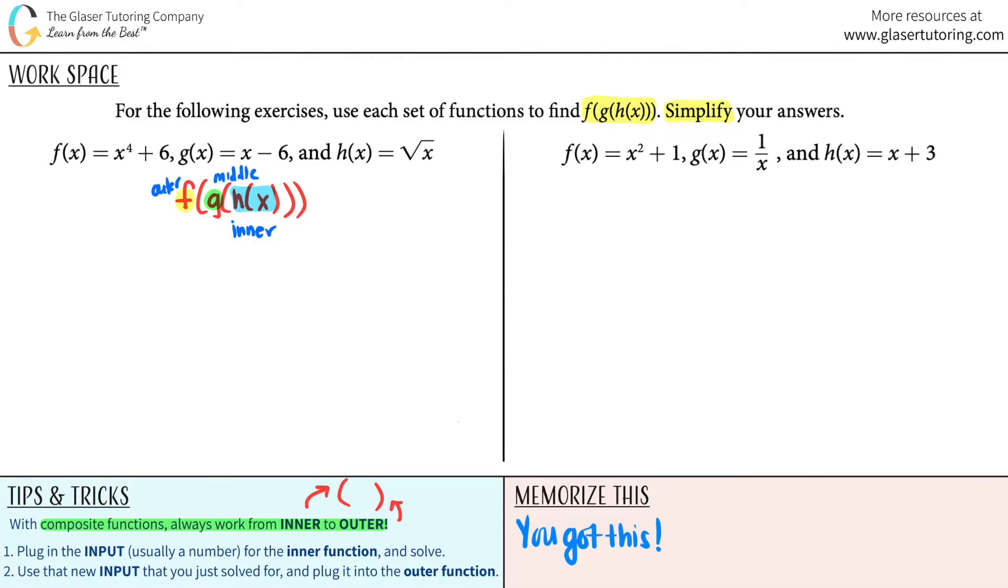So for this you're going to be plugging in an input. It's usually a number for the inner function and solving. So I'm gonna put a one here and we need to work with the inner function. The inner function was h of x. Now I said usually a number, which means that this should have been like h of 2 or h of 3, but in this case they just leave it as h of x. So I can't really do anything but h of x is the square root of x. I can't simplify this. I can't do anything algebraically. So this is the answer to the first part.